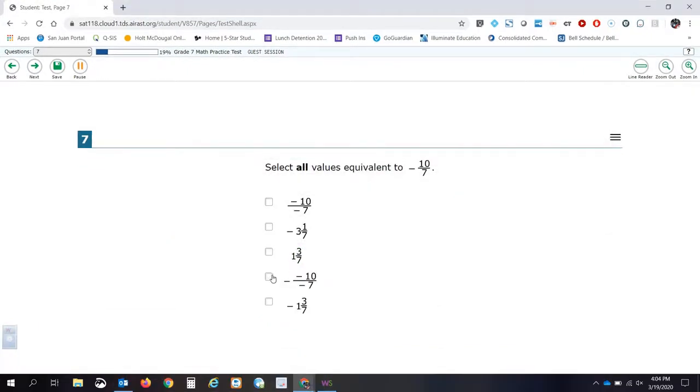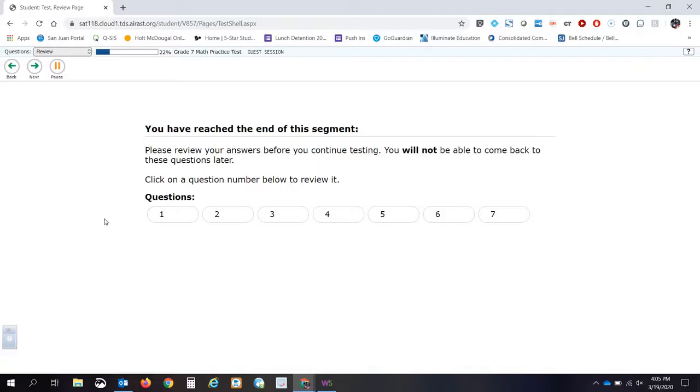For number seven, we're going to go ahead and choose the last two. Just a reminder: on these questions that say select all values that are equivalent to, they don't always have more than one answer, but they're usually going to have more than one answer. That takes care of question number six and question number seven. We've reached the end of this segment, so we're going to go ahead and move on.